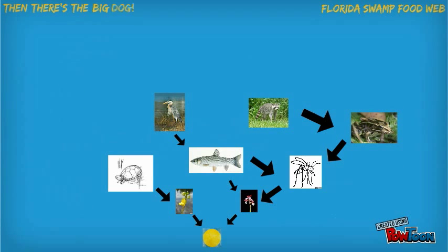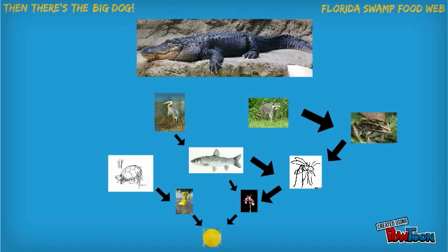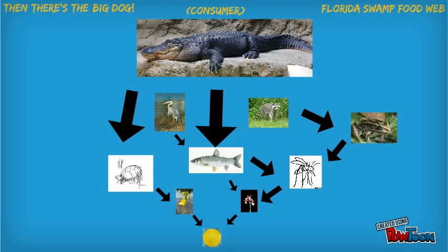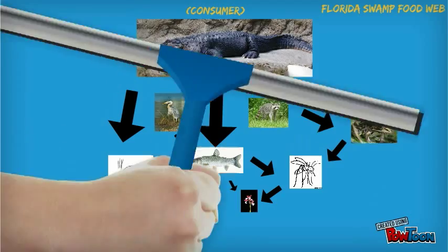Then there is the big dog. In the Florida Swamp slash Everglades, that is the American alligator. He can eat basically whatever he wants, but his main prey are the eastern mud turtle, grass carp, and raccoon.